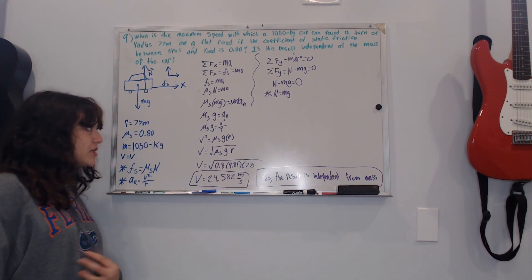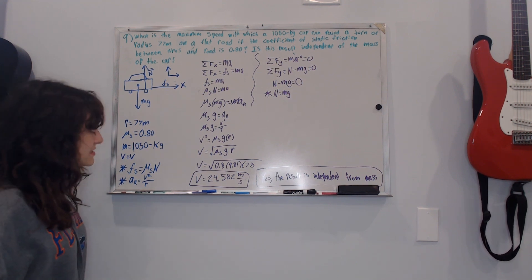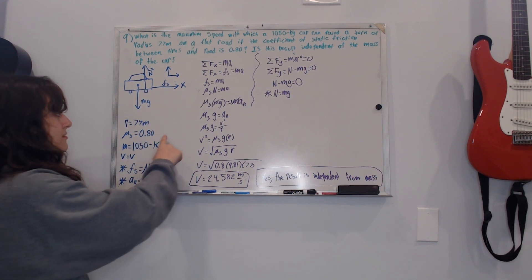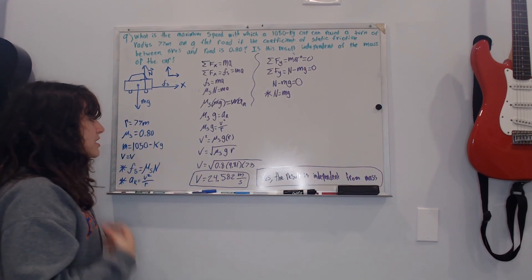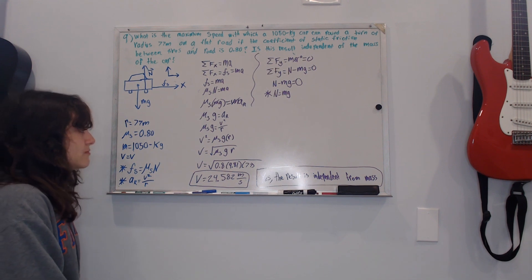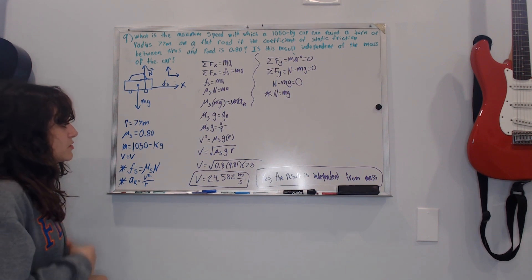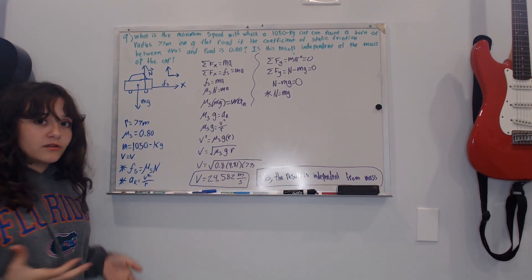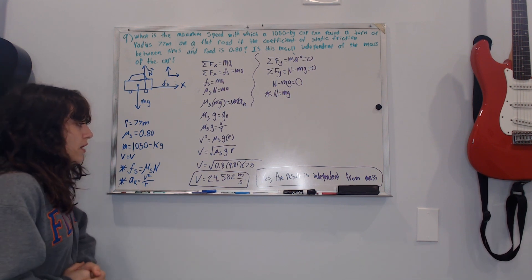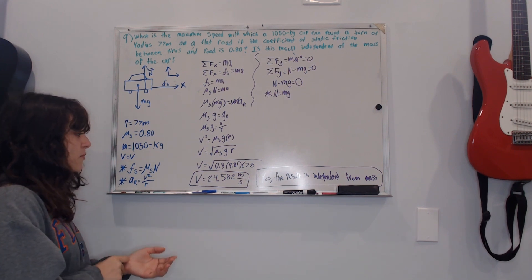Since we're solving for velocity, I substitute radial acceleration with v squared over r, giving mu times g equals v squared over r. Multiplying both sides by r gives v squared equals mu times g times r. Taking the square root, v equals the square root of mu times g times r. Plugging in mu equals 0.80, g equals 9.81, and r equals 77, I get v equals 24.582 meters per second.